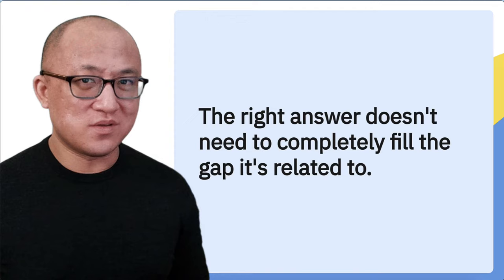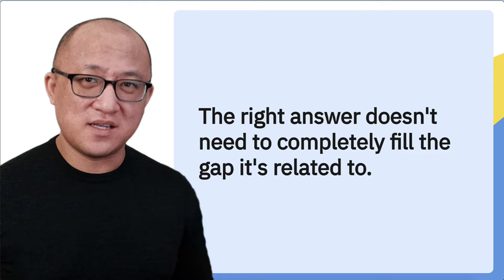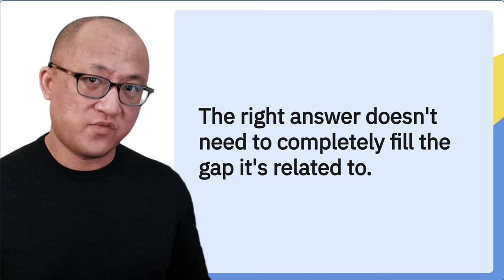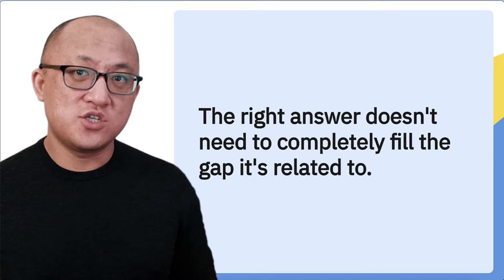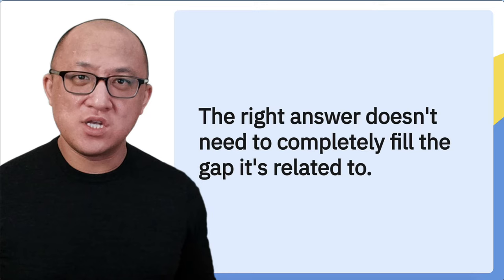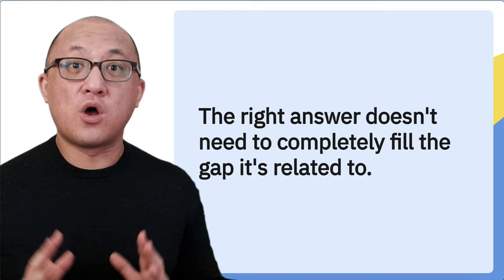Tip number three for necessary assumptions is to remember that the right answer does not need to completely fill the gap that it's related to. So far with the previous two tips, I gave you example arguments and assumptions where the assumptions did happen to completely fill the gap — 'anything that has wings can fly' was something that completely filled the gap, or in other words, was sufficient to prove the conclusion. But in necessary assumption questions, sometimes you get answers that are basically within the umbrella of that larger assumption. An example and a visual would best help convey this idea.